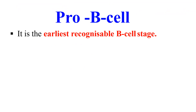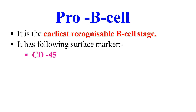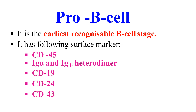The first stage is the pro B cell stage. It is the very early stage in B cell maturation — the very next stage after the hematopoietic stem cell. It has the following markers: CD45, immunoglobulin alpha and beta heterodimer, CD19, CD24, and CD43. These are the markers present on the surface of the B cell when it is in the pro B cell stage.